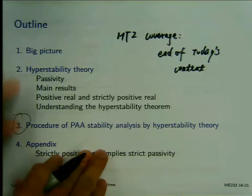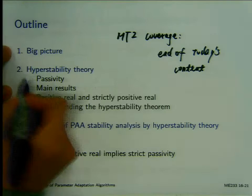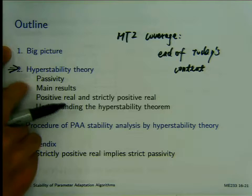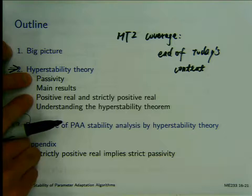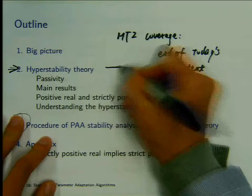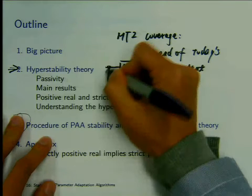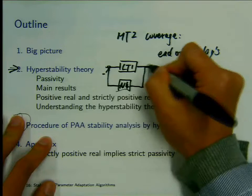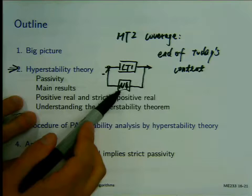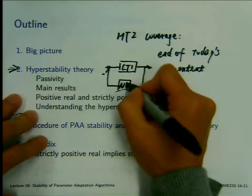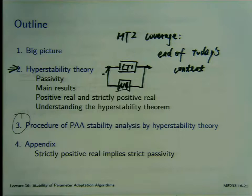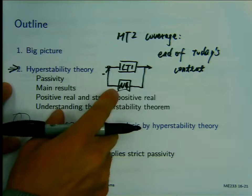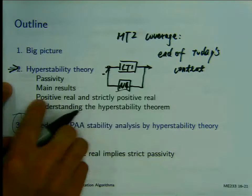Let's first take a look at what we covered last time. We covered the contents of — we introduced passivity, and positive real, strictly positive real — these two new concepts. And then with these two new concepts, we can build the hyperstability theory using this block diagram. This is the main block diagram for this analysis. We have a linear feed-forward block and a dynamic nonlinear block. The nonlinear block satisfies the Popov inequality — meaning it is passive — and the linear time-invariant block has to be strictly positive real, SPR. These are the conditions for hyperstability of this closed-loop system.